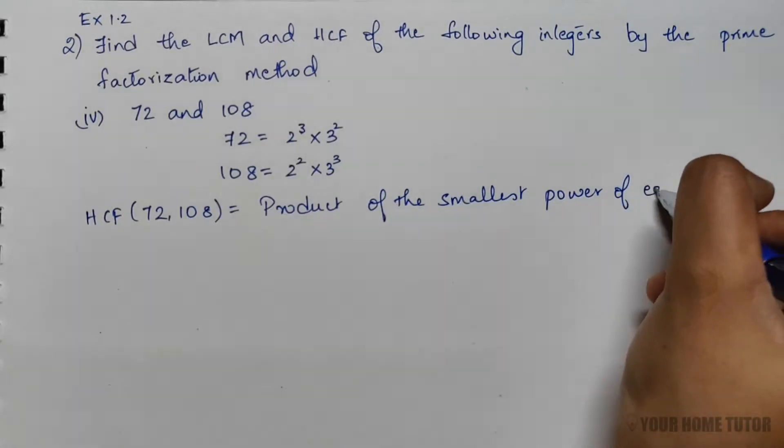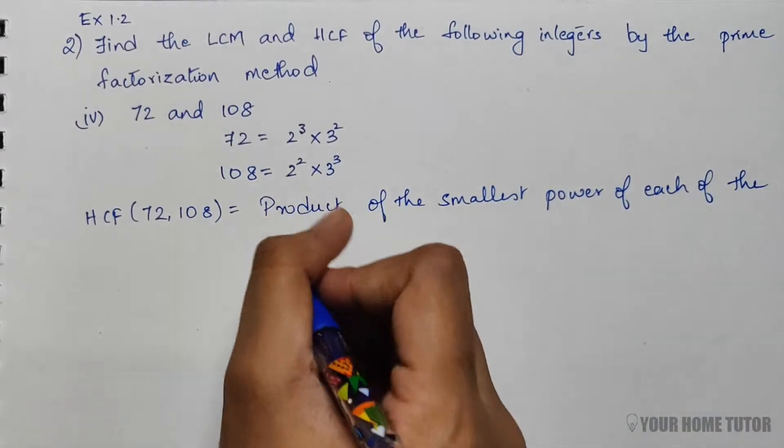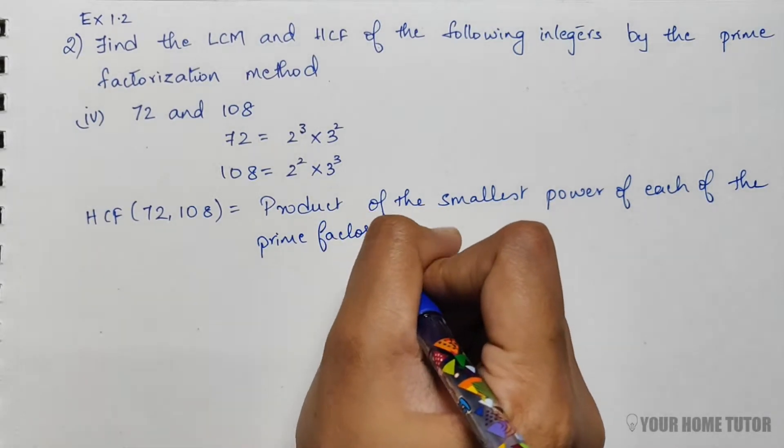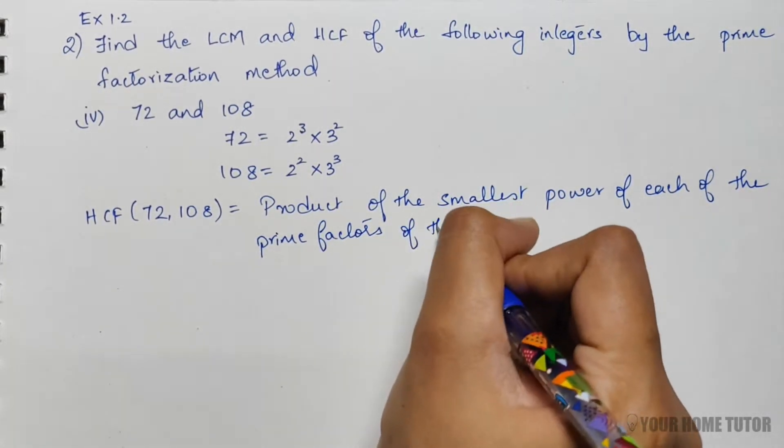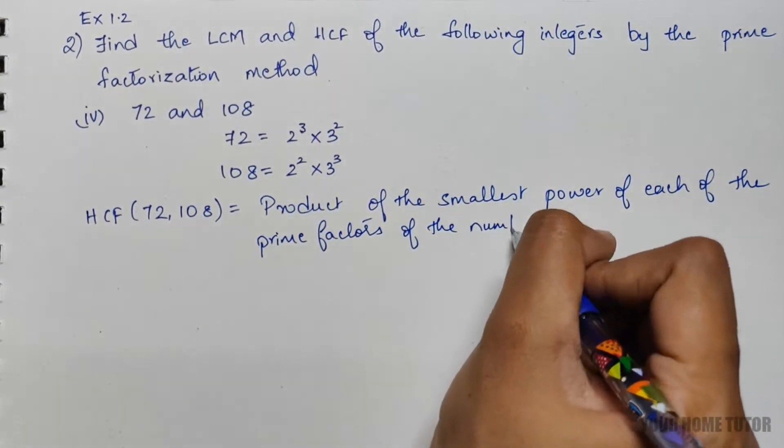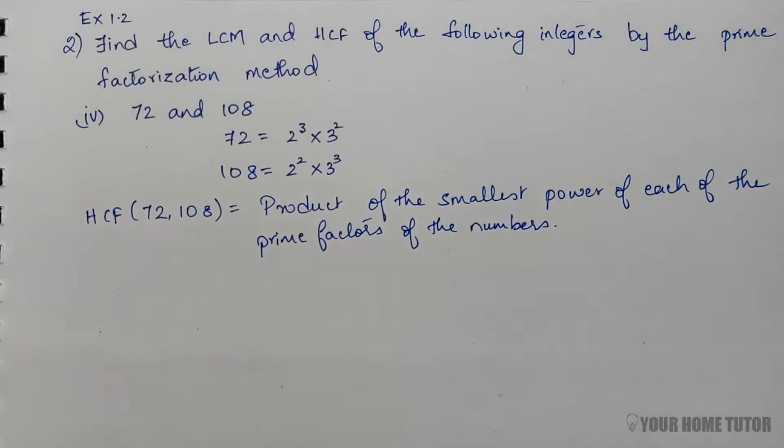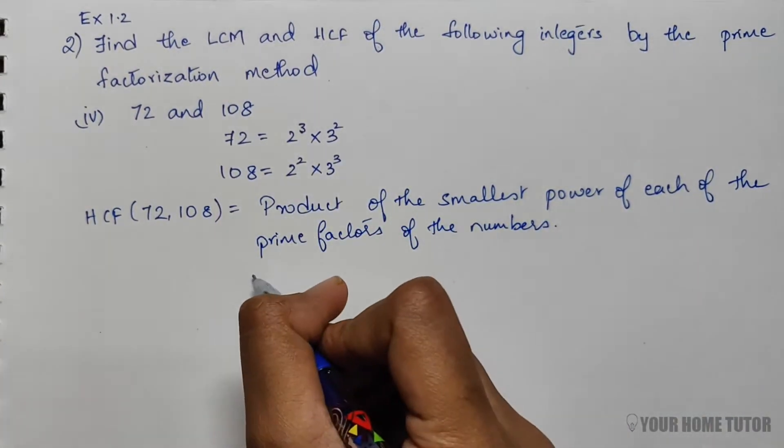For 2, the smallest power is 2², and for 3, the smallest is 3².